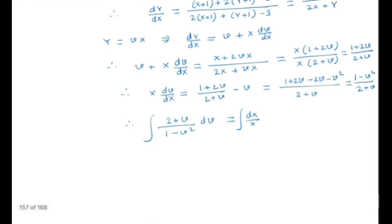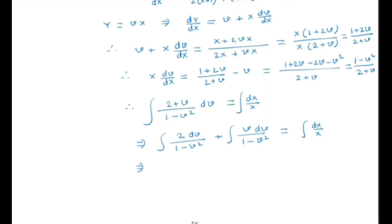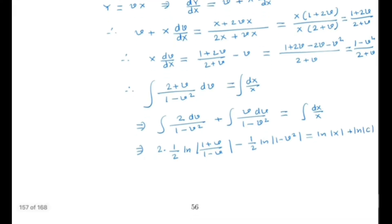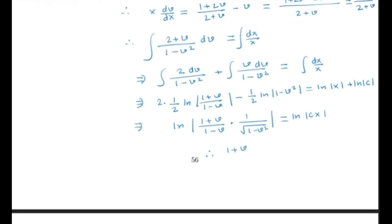Taking the integral of both sides, we get the integral of 2/(1 - v²) dv plus the integral of v/(1 - v²) dv. This evaluates to 2 × (1/2) ln|(1 + v)/(1 - v)| minus (1/2) ln|1 - v²|, which equals ln|X| plus ln|c|.